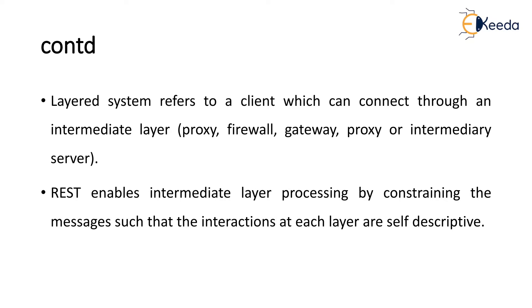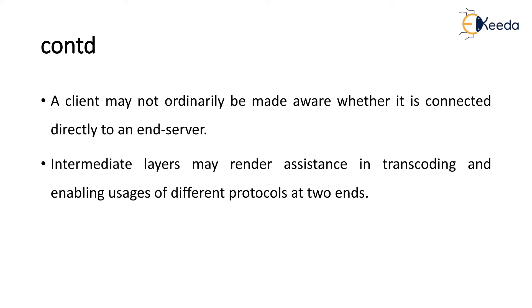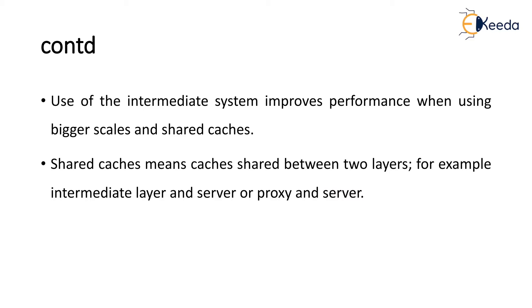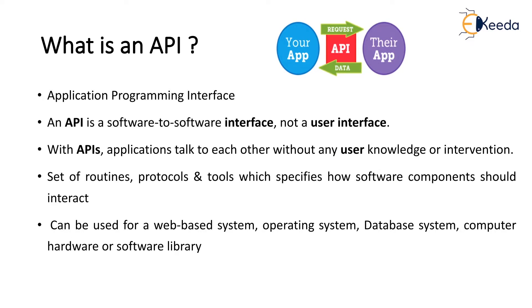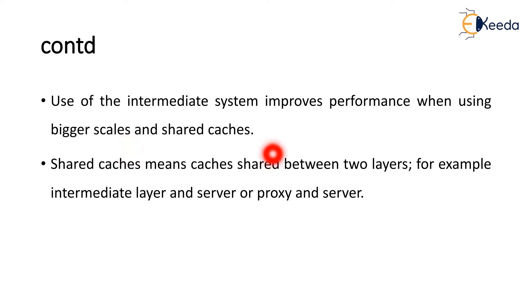The layered system refers to a client which can connect through an intermediary layer — that is, a proxy, firewall, or gateway. REST enables intermediate layer processing by constraining messages such that interactions at each level are self-descriptive. A client may not ordinarily be aware whether it is connected directly to an end server. Intermediate layers may assist in transcoding and enabling usage of different protocols, providing performance improvements using larger scales and shared caches — meaning caches shared between two layers, for example, intermediate layer and server, or proxy and server.